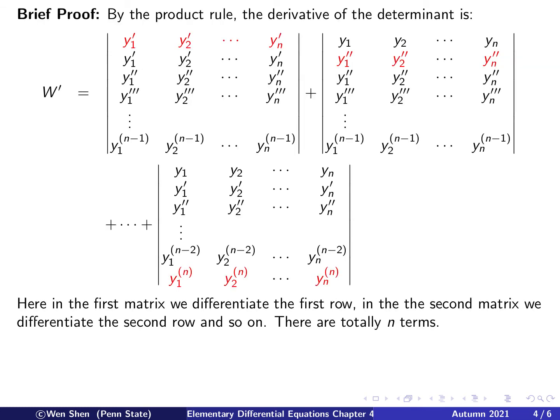So what will be the derivative of that Wronskian determinant? So we know that the definition of the determinant, and each term in the determinant is a product of n terms, n entries in there. So by the product rule, we can actually write out W prime here, we can break it up into n terms, where we differentiate each row, one row at a time.